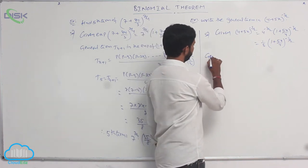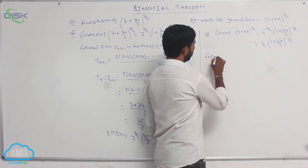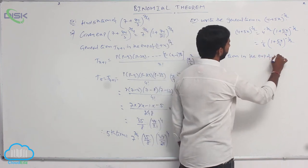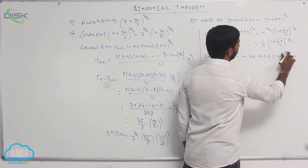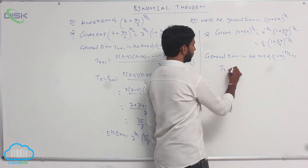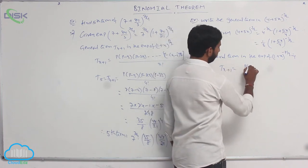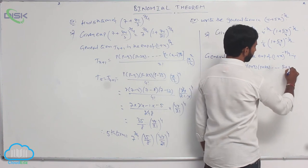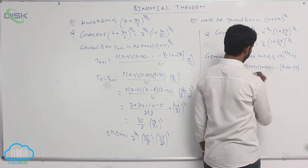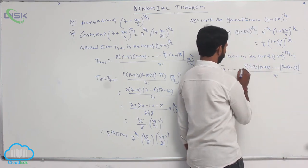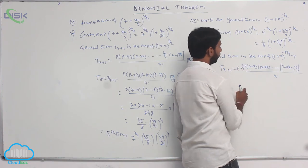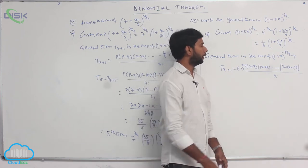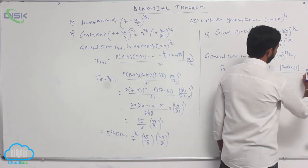For (1 + 5x/4), the general term in the expansion of (1 + x) whole power −p/q is: t(r+1) = (−1)^r · [p · (p+q) · (p+2q) · ... · (p+(r−1)q)] / r! · (x/q)^r.